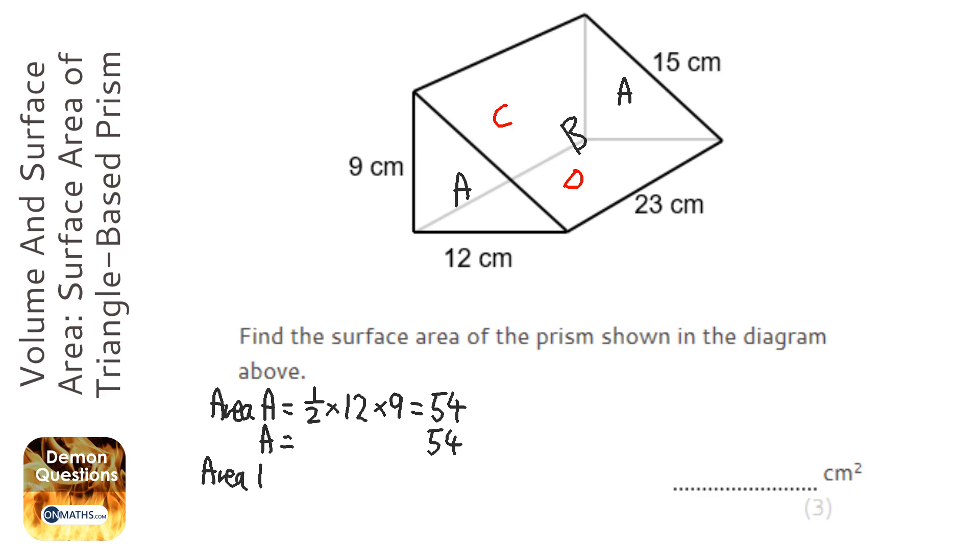Area B. Now the width of that rectangle is 23, and the height of it, it says at the back here, is 15. So I'm going to do 23 times 15, which is 345.